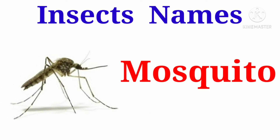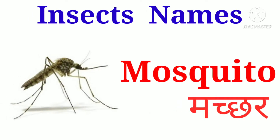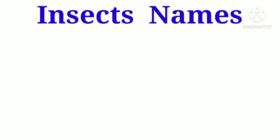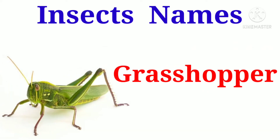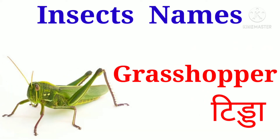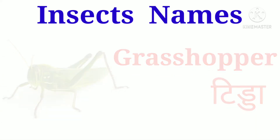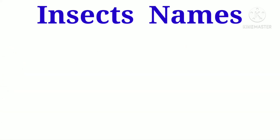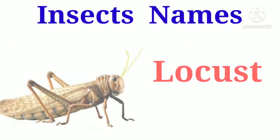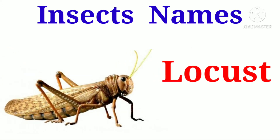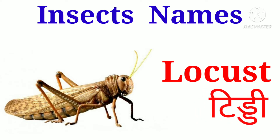Mosquito. Mosquito ko Hindi me hum machar kehte hain. Grasshopper. Grasshopper ko Hindi me hum tiddha kehte hain. Locust. Locust ko Hindi me hum tiddhi kehte hain.